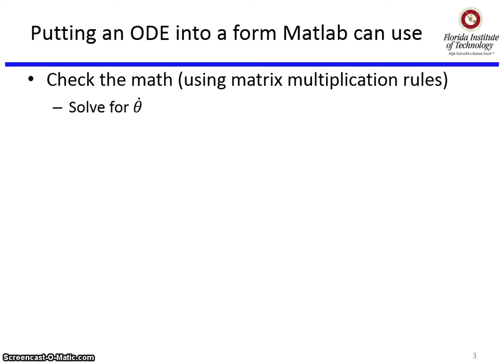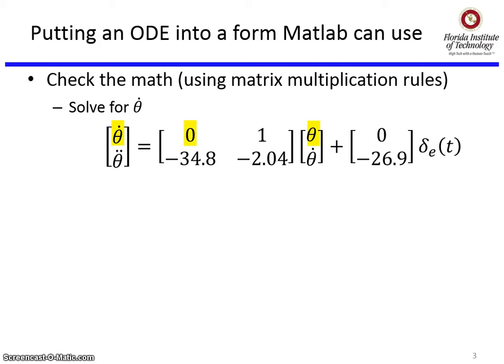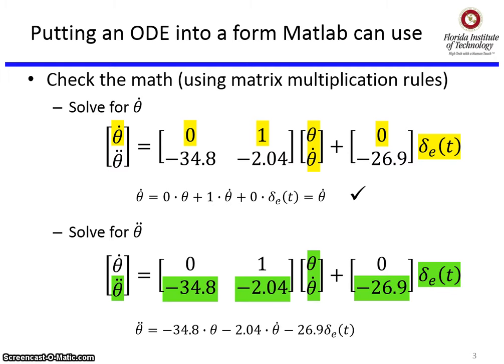Solve for θ̇: it's 0×θ + 1×θ̇ + 0×δₑ, and that checks. Solve for θ̈: -34.8×θ - 2.04×θ̇ - 26.9×δₑ. Yes, that matches equation 2, so we're good to go.